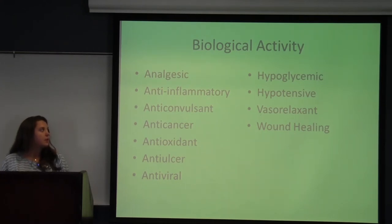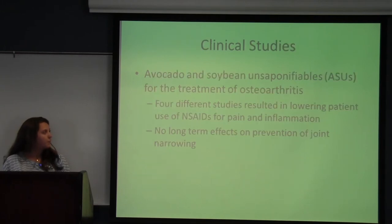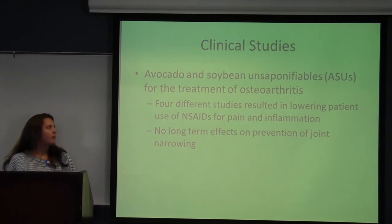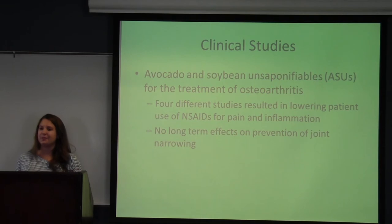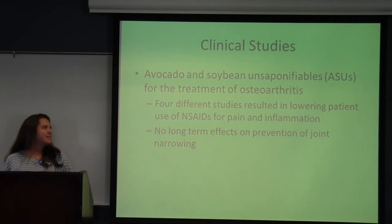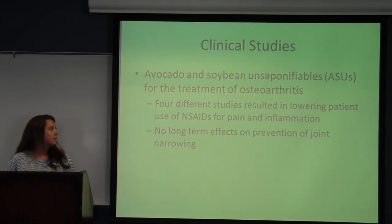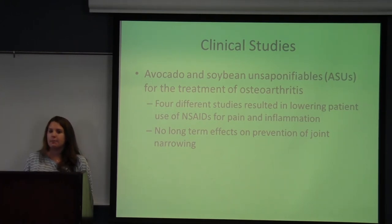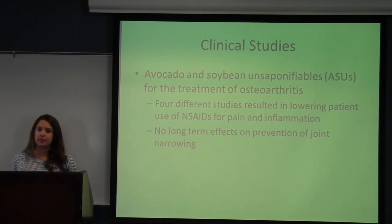It was found in one study with rats that normotensive rats given an extract of the fruit showed hypotensive effects. Some clinical studies include avocado and soybean unsaponifiables — basically the parts of the plant that don't form soap — used in the treatment of osteoarthritis, which is a degenerative joint disease. It was found that using these extracts resulted in a decrease in the use of NSAIDs for pain and inflammation management, but no long-term effects were found. Studies among diets enriched with avocados and olive oil were also found to have anti-diabetic effects by lowering cholesterol and triglycerides in the blood.